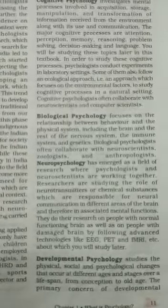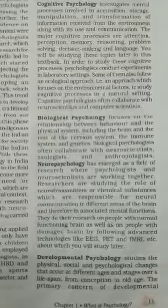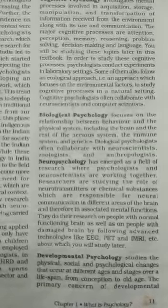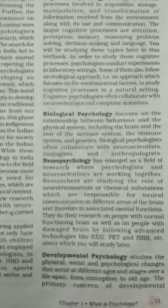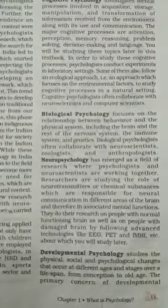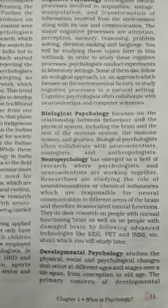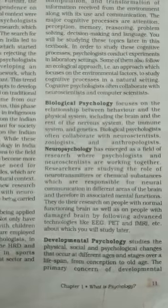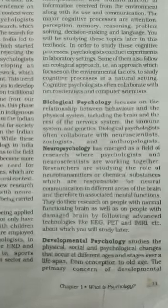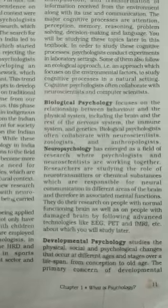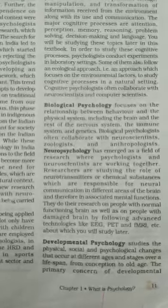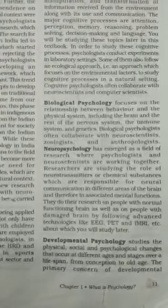Another field of psychology is neuropsychology. Neuropsychology is the study of the relation between behavior, emotions, and cognitions on one hand, and brain functions on the other. It is concerned with how the brain and the rest of the nervous system influence a person's cognitions and behavior. Neuropsychology has emerged as a field where psychologists and neuroscientists work together, studying the role of neurotransmitters — chemical substances — and how the passing of signals from one neuron affects another, which are responsible for neural communication in different areas of the brain and associated mental processes.